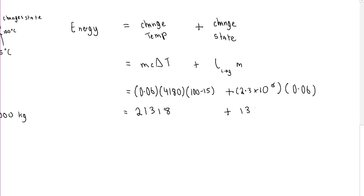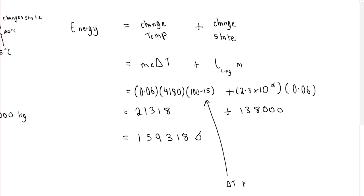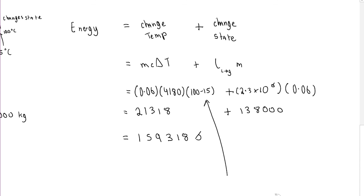Calculating gives 21,318 J for the temperature change and 138,000 J for the change of state, totalling 159,318 joules. Note: your change in temperature must always be a positive value — subtract the smaller from the larger. If heating, it's final minus initial; if cooling, it's initial minus final.